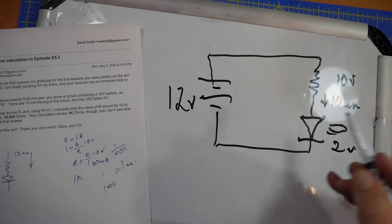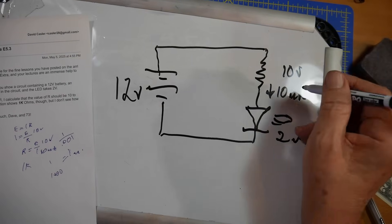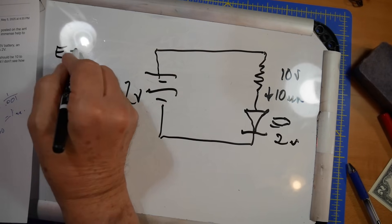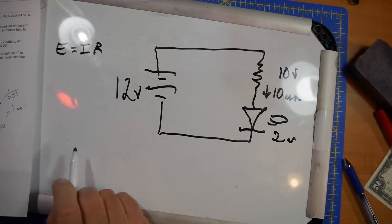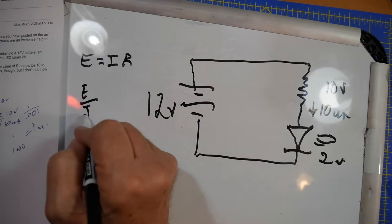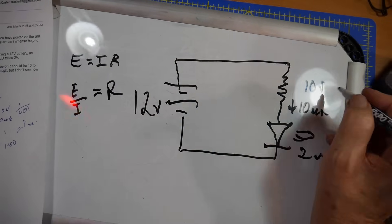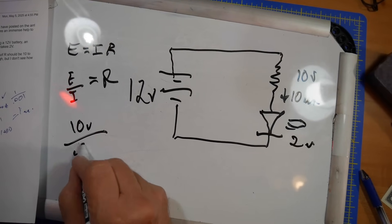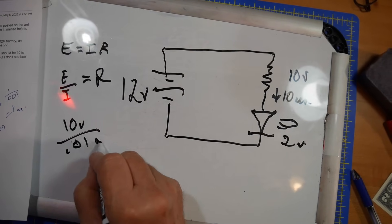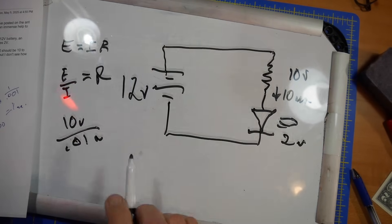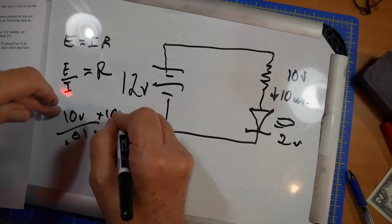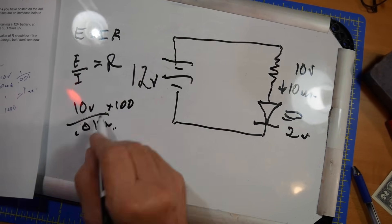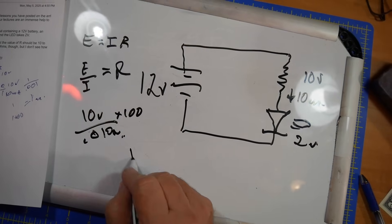What is the current? Charlie says there's a 10-volt voltage drop across the resistor — that's true — and there's 10 milliamps of current. So can we figure out what the resistor value is? Well, E equals IR, or rearranged, R equals E over I. The voltage is 10 volts and the current is 0.01 amps — everything has to be in amps, volts, and ohms. 10 milliamps is 0.01 amps.